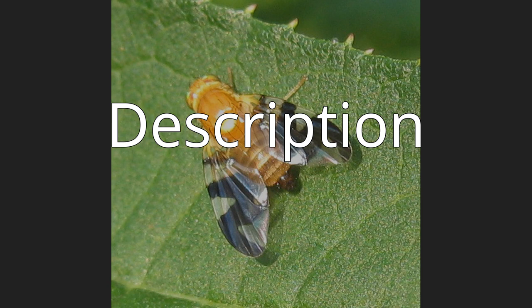The head is hemispherical and usually short. The face is vertical or retreating and the frons is broad. Ocelli and ocellar bristles are present. The post-vertical bristles are parallel to divergent. Two to eight pairs of frontal bristles are seen, at least one but usually several lower pairs curving inwards and at least one of the upper pairs curving backwards. In some species, the frontal bristles are inserted on a raised tubercle.